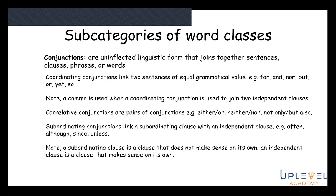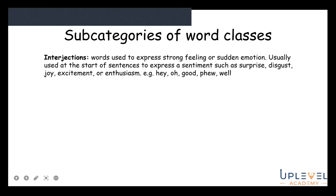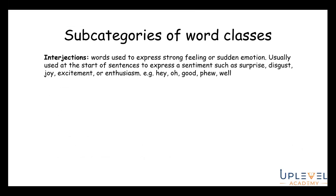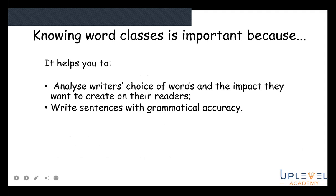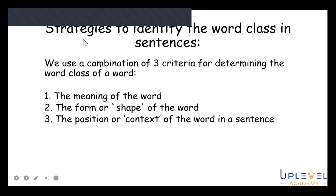Interjections are words used to express strong feelings or sudden emotion, usually at the start of a sentence, expressing sentiments such as surprise, disgust, joy, excitement, or enthusiasm — for example hey, oh, good, well. Knowing word class is important because it helps you analyze writers' choices and the impact they want to create on readers, and it enables you to write sentences with grammatical accuracy.